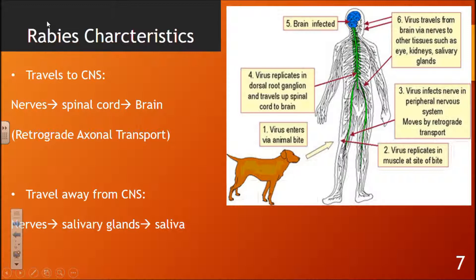We will go over the difference between a positive single-stranded RNA virus versus a negative single-stranded RNA virus. It does include five proteins — N, P, M, G, and L — but for this presentation, we're going to be focusing on the G protein, the glycoprotein that surrounds the virus itself. It also has a helical ribonucleoprotein core, which means it has N proteins surrounding the RNA genome.